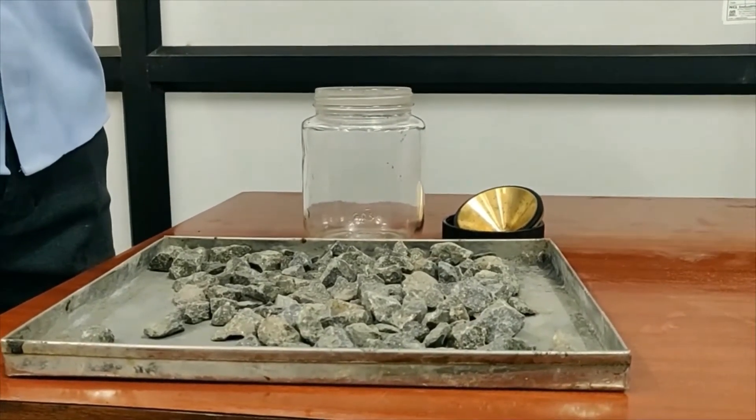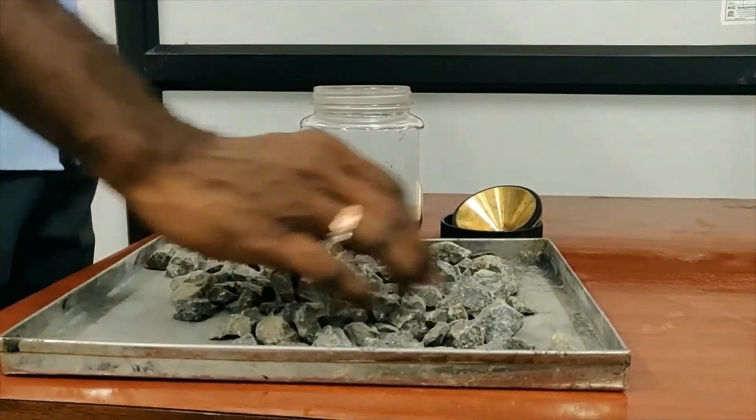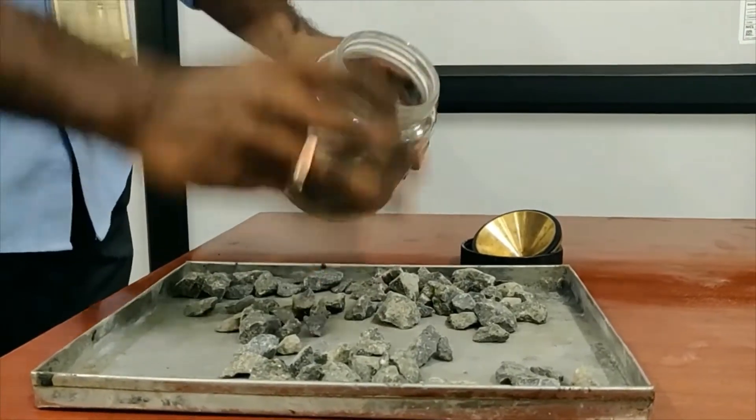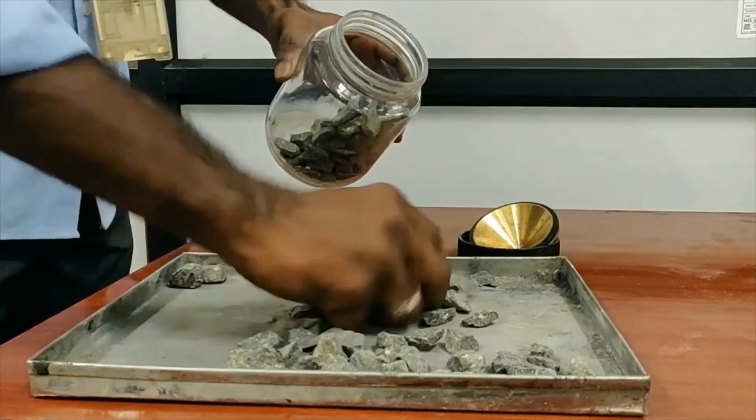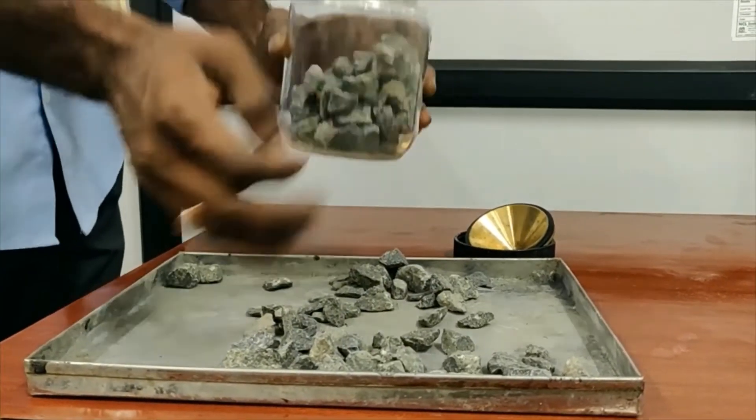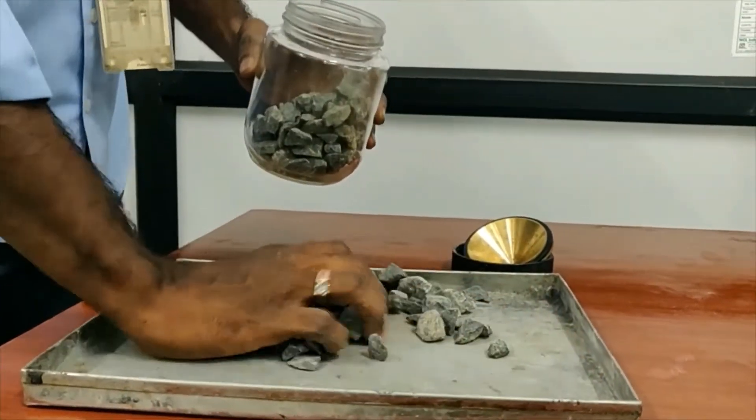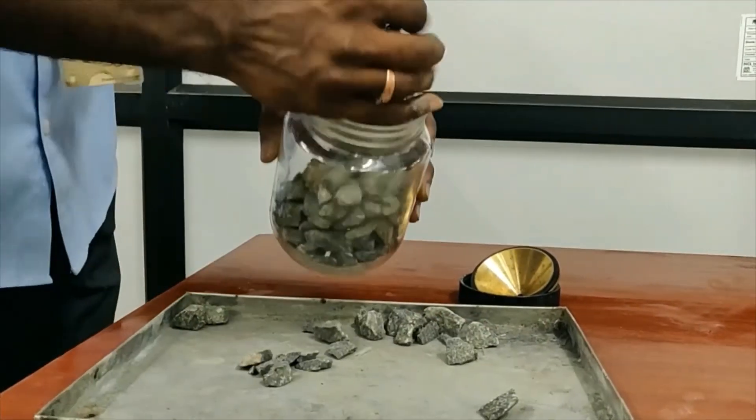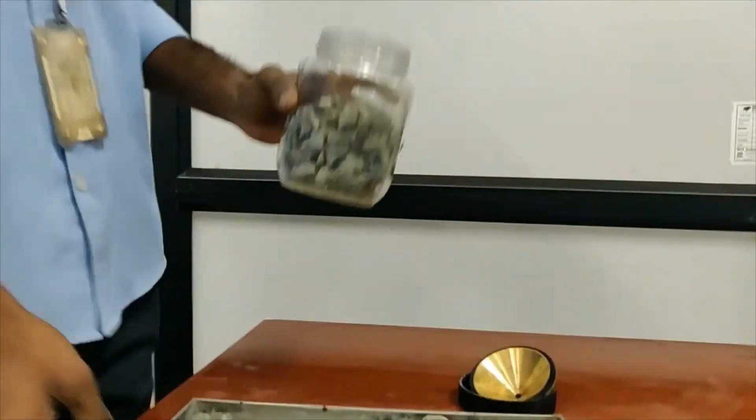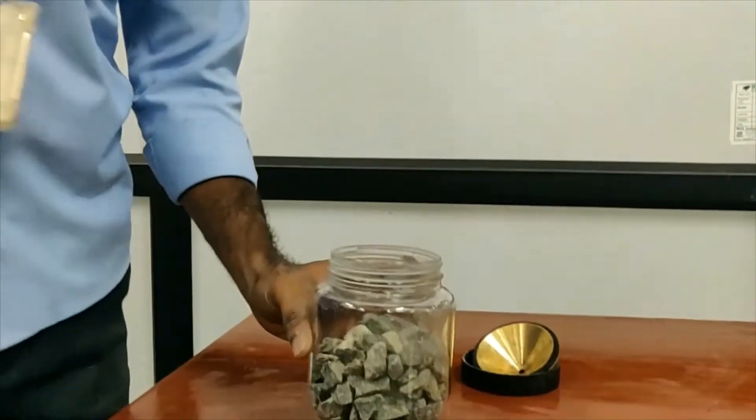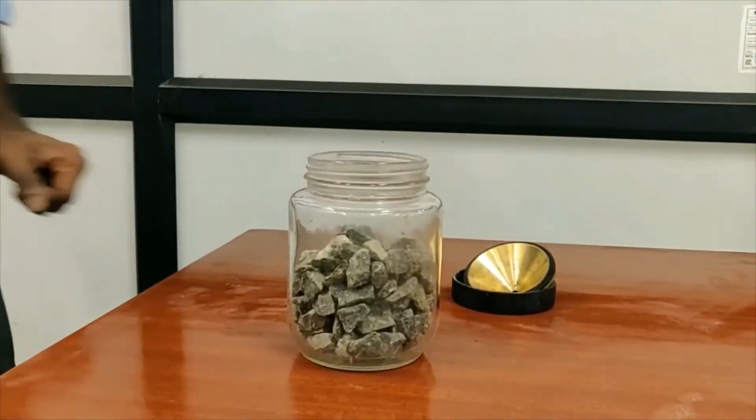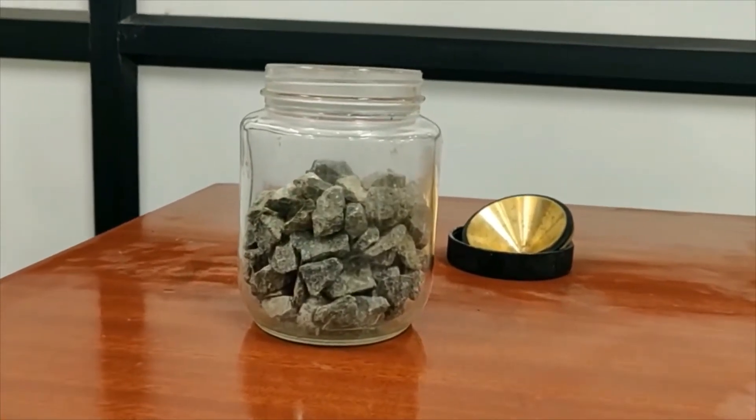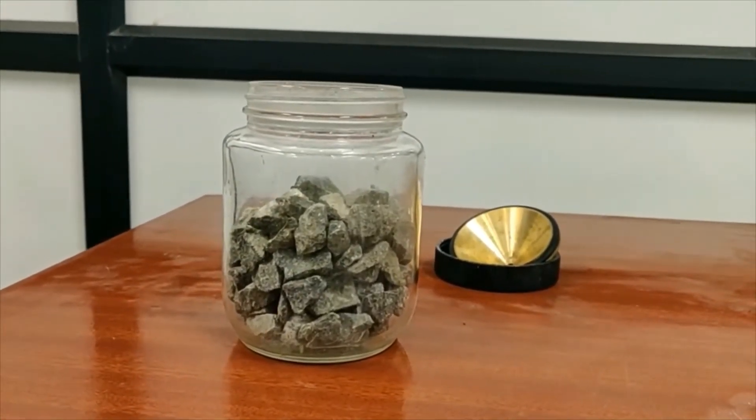Now we should fill the coarse aggregate sample in the pycnometer jar up to two-thirds of the jar. We should be careful while placing the coarse aggregate. If you give too much force while placing the coarse aggregate, the jar might break, so you should be very careful while filling the coarse aggregates.